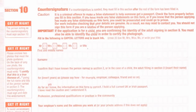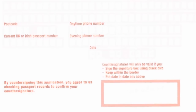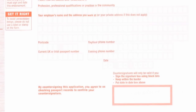Section 10 is only required for passport renewals when an applicant has significantly changed in appearance since their last application. In this section, you must ask your countersignatory to complete the information in his or her own handwriting. Before signing, make sure the countersignatory knows he should not touch the borders of the box.